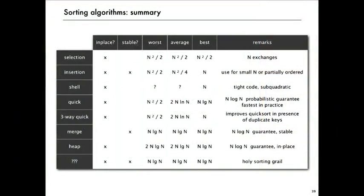That completes our full treatment of sorting algorithms with Heapsort. Adding the Heapsort line to the comparison table: it's not stable, it is in-place with no auxiliary array, and its worst-case guaranteed time is proportional to N log N — as is its average and best case. So it's N log N guaranteed and in-place, but not stable. We still have the hope that someday somebody will develop a simple in-place stable worst-case N log N algorithm, but we're not quite there yet.